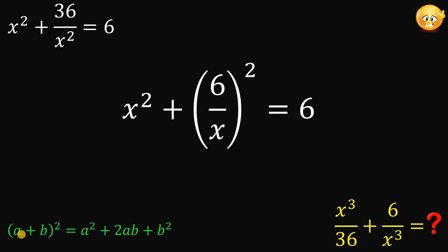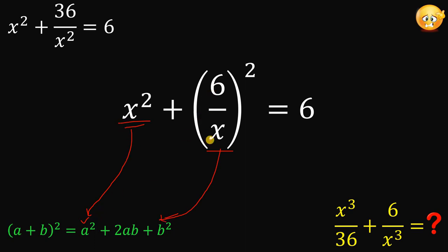Recall that when we have a plus b raised to the power of 2, it equals a squared plus 2ab plus b squared. Now, x squared and 6 over x raised to the power of 2 represent our a squared and b squared respectively. So x equals a and 6 over x equals b. What we're going to do is add one term — 2 times a times b — on both sides to make the left-hand side a perfect square trinomial.